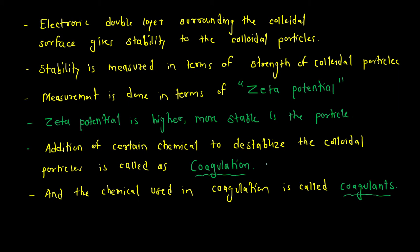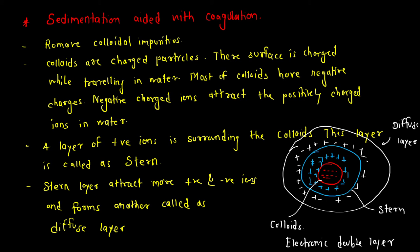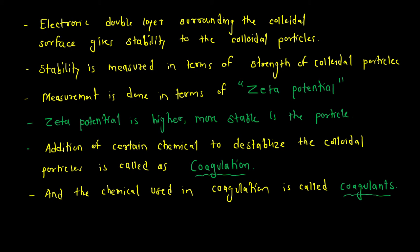To recap: a colloidal particle traveling in water mostly has a negative charge. That negative charge attracts positive charges and forms a stern layer. The stern layer further attracts positive and negative ions forming a diffuse layer, giving the particle protection. The strength of these layers is expressed as zeta potential. To destabilize those layers we add certain chemicals — that process is coagulation and the chemical used is called a coagulant.